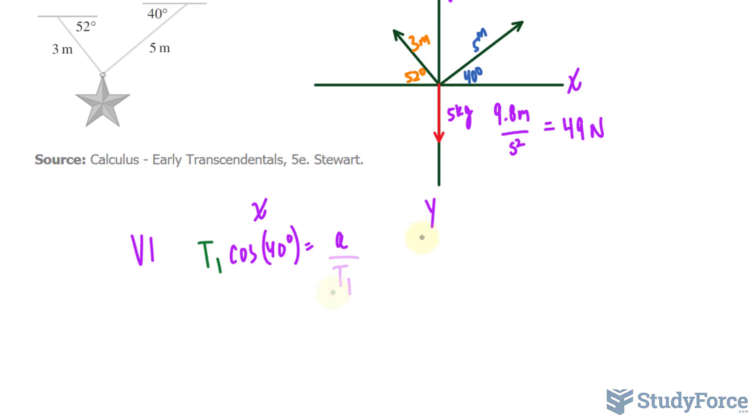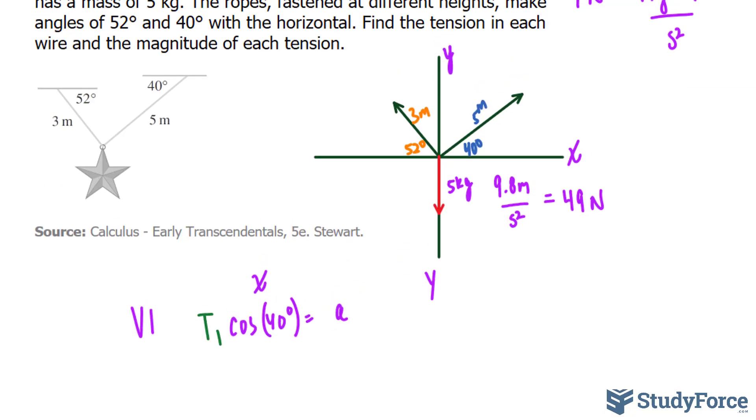Similarly, I'll find the y component of this vector using the same method. Rather than using cosine, however, we're looking for this part. That's the y component, so we'll use sine.